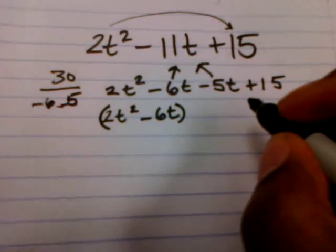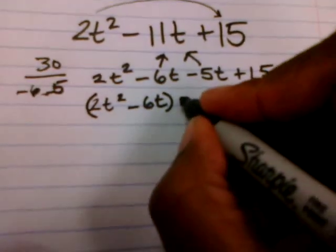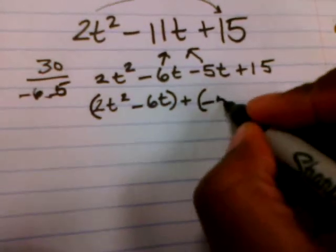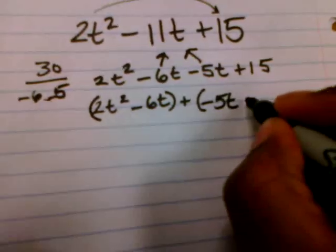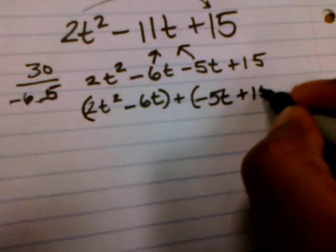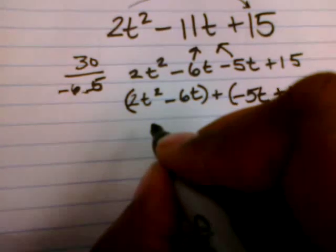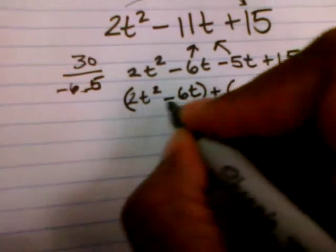Then I'm going to have that being added to the quantity of a negative 5t plus 15. Close those parentheses.